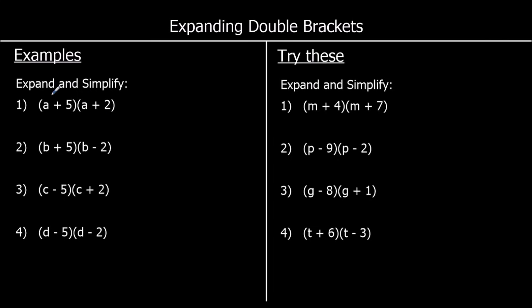Which means we need to multiply both of the terms in the first bracket by both of the terms in the second bracket. So we're going to have a times a and a times two, we're going to have five times a and five times two — so we're going to have four terms.